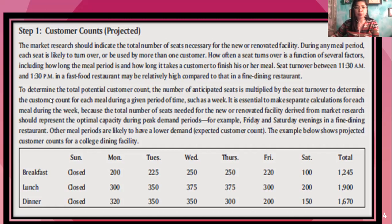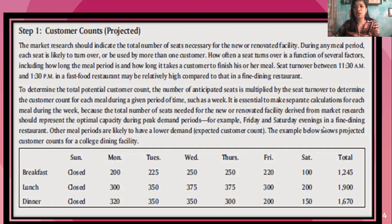In order to know how many people are coming in, the total potential customer count — the number of anticipated seats — is multiplied by the seat turnover to determine the customer count per meal period. It is essential to make separate calculations for each meal during the week, because the total number of seats derived from market research should represent the optimal during the peak demand period — for example, Fridays and Saturdays in a fine dining restaurant. Other meal periods are likely to have lower expected customer counts.